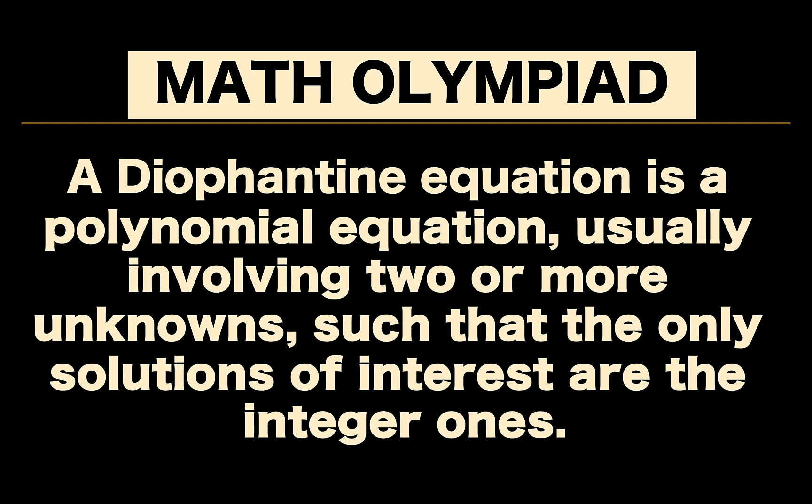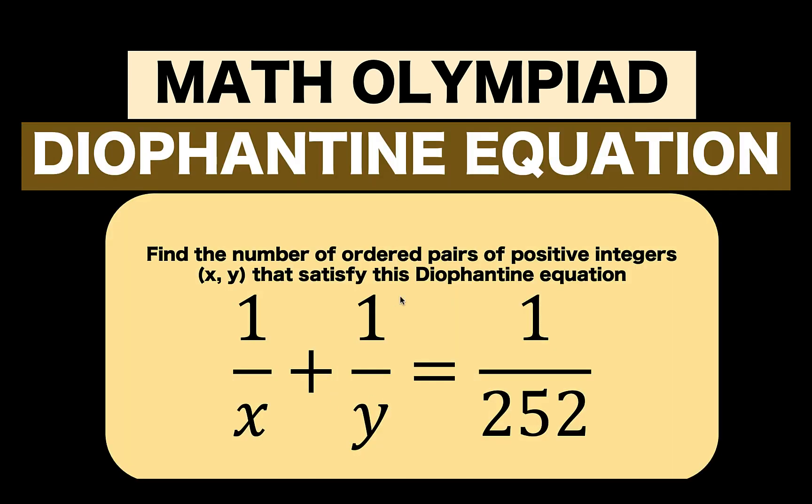Let's recall that when we say Diophantine equation, it is a polynomial equation, usually involving two or more unknowns, such that the only solutions of interest are the integer ones. So in this equation, we limit our solution to positive integer values for x and y.